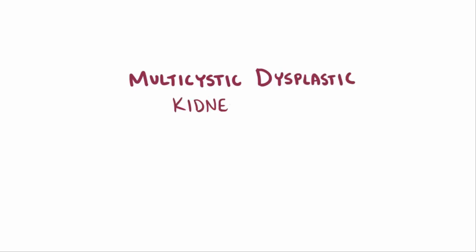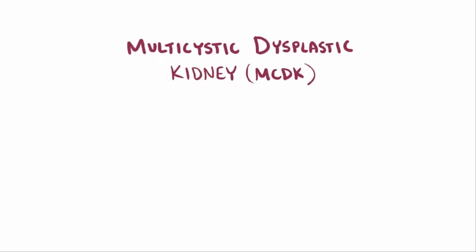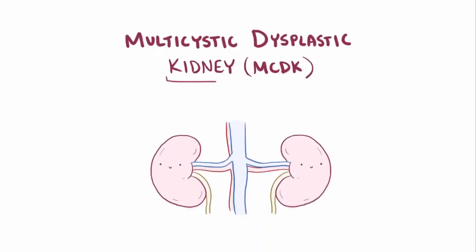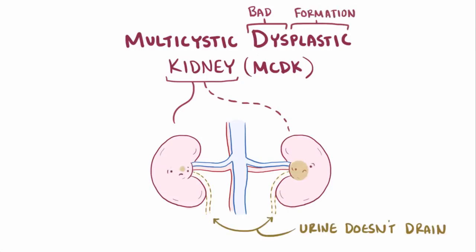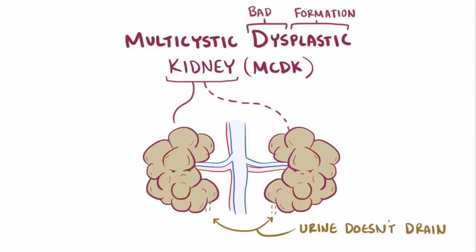Multicystic dysplastic kidney, or MCDK, is a congenital disease where one or both kidneys don't form quite right, specifically causing them to not drain urine properly, which results in urine building up in the kidneys and forming multiple fluid-filled sacs called cysts.